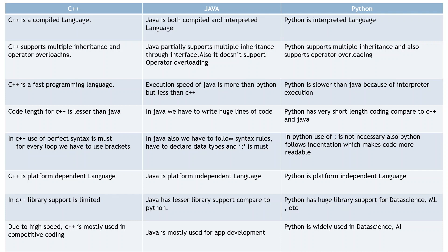Finally, the use cases: C++ is mostly used in competitive coding due to its high speed. Java is mostly used for app development. Python is widely used in data science and AI. So these are the key use cases that differentiate the three languages.